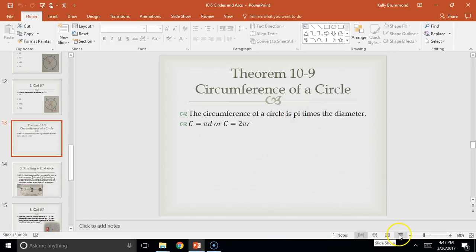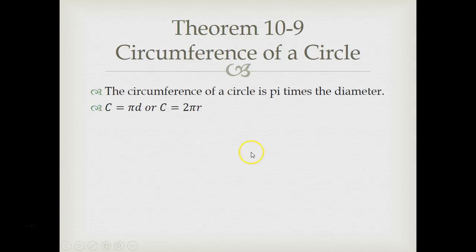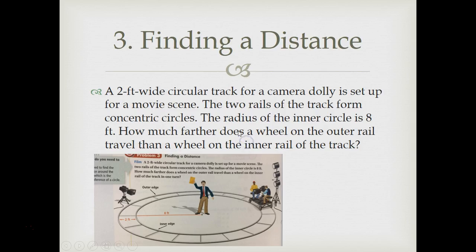Both of my classes have at least got to here. So if you haven't, this should be in your Theorem and Postulate Notebook. Theorem 10-9, Circumference of a Circle. And this is review. The circumference of a circle is pi times the diameter. So C equals pi times D or C equals 2πr, which we can use to solve this problem.